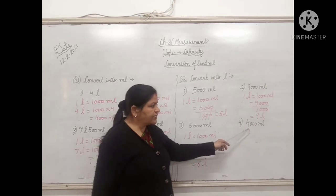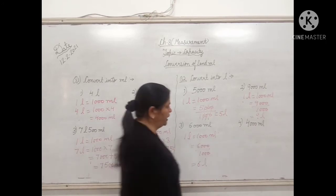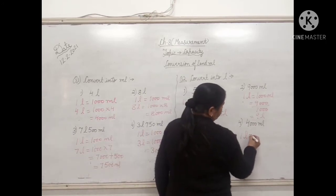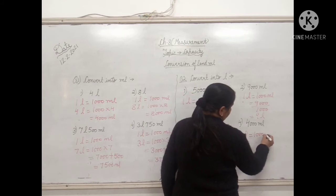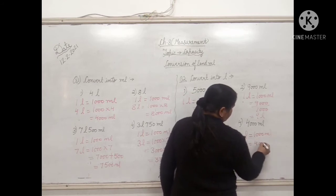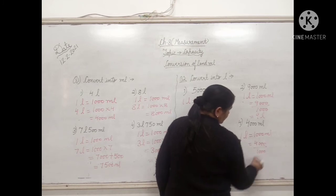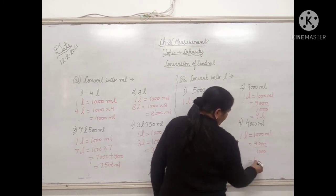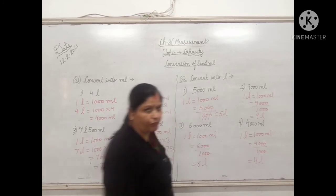Last one: 4000 milliliter. Again 1 liter equals 1000 milliliter. So 4000 upon 1000. Cut the zeros and the answer will be 4 liter.